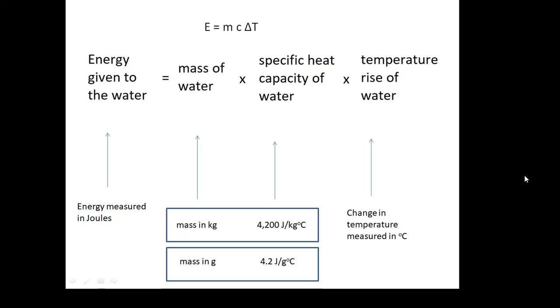And you use this equation: E equals MC delta T. E is the energy given to the water in joules. M is the mass of the water. You can do it in kilograms, or you can do it in grams. C is the specific heat capacity of the water. If we're doing the mass in kilograms, then it's 4,200, that's joules per kilogram degree centigrade. You can do it in grams and use 4.2. And then delta T is the temperature rise of the water. Delta, this triangle, means the change, the change in temperature.